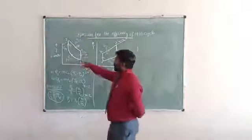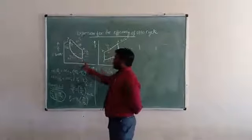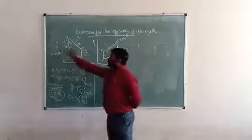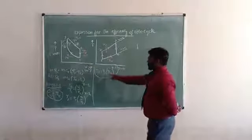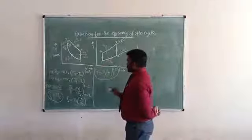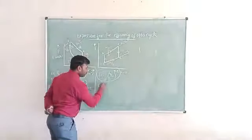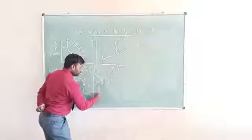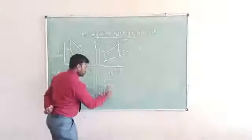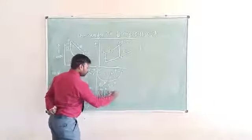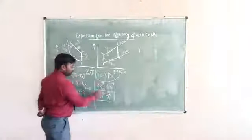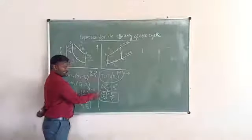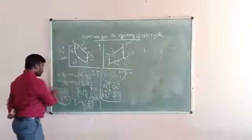T1 will be given in the problem. We need to find T2, T3, and T4 at all the salient points, along with the corresponding pressures and volumes P2, V2 and P3, V3 and P4, V4. To find P2, we use P1V1^γ = P2V2^γ, so (V1/V2)^γ = P2/P1. If we know P1, we can find P2 from this equation.